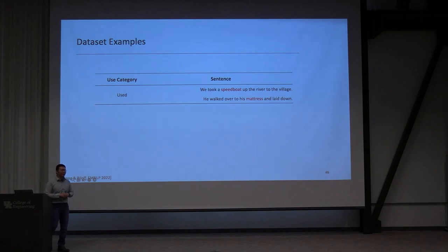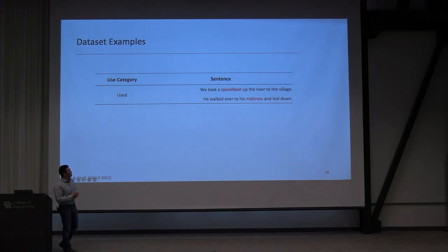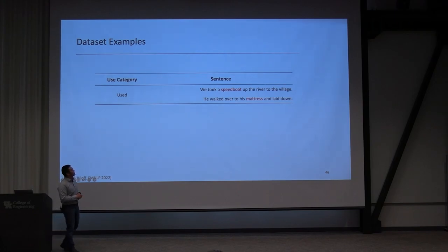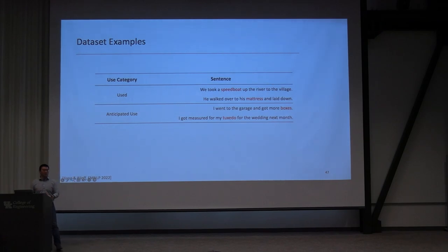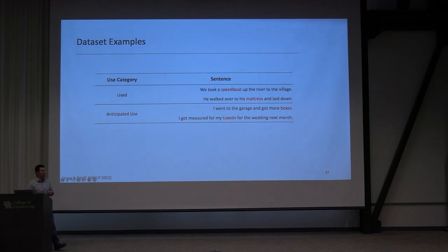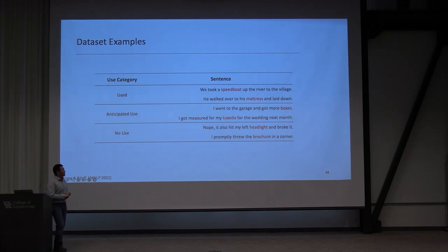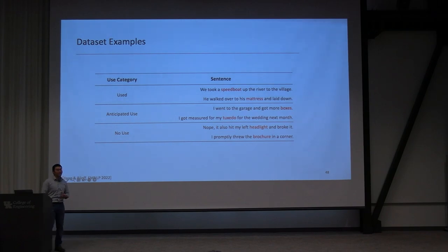Here are examples from our human-annotated dataset. For the 'used' category: 'We took a speedboat up the river to the village' — the speedboat was already used. 'He walked over to his mattress and laid down' — the mattress was used. For 'anticipating use': 'I went to the garage and got more boxes' — you want to use them. 'I got measured for my tuxedo for the wedding next month' — you'll wear it. For 'no use': 'no plate hit my left headlight and broke it' or 'I promptly threw the brochure in the corner to collect dust' — no intention to use these items.